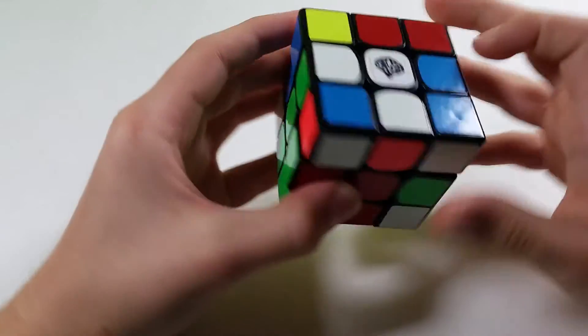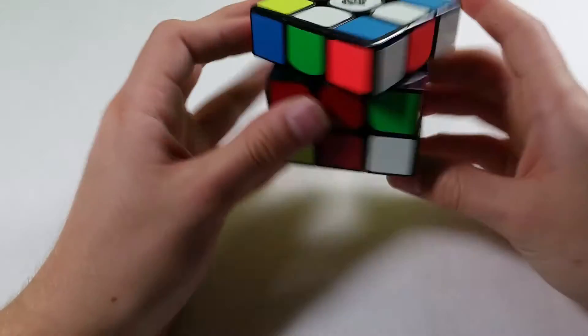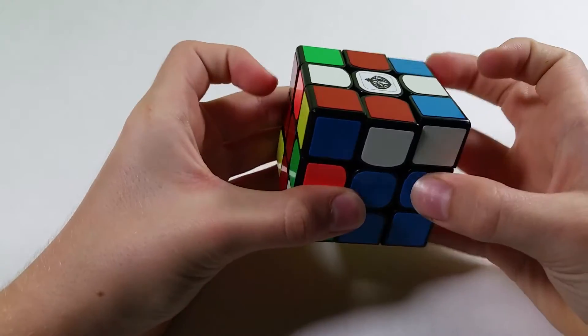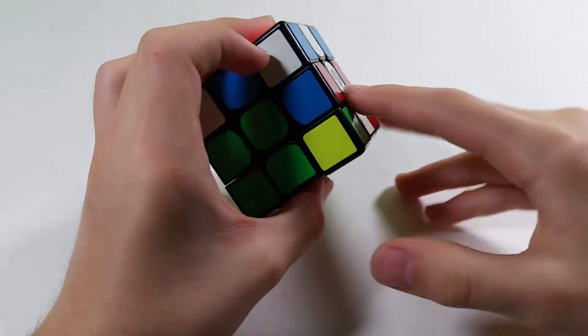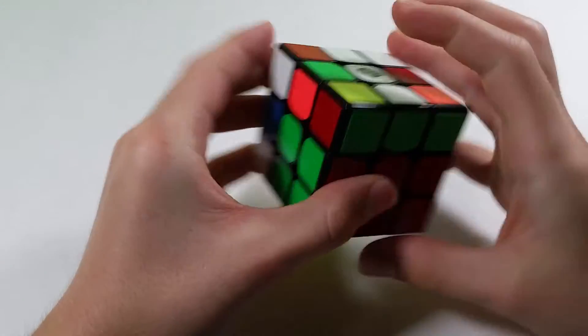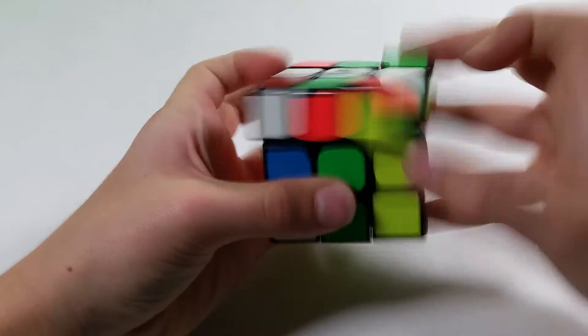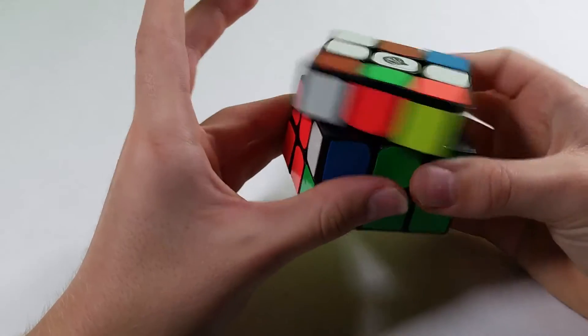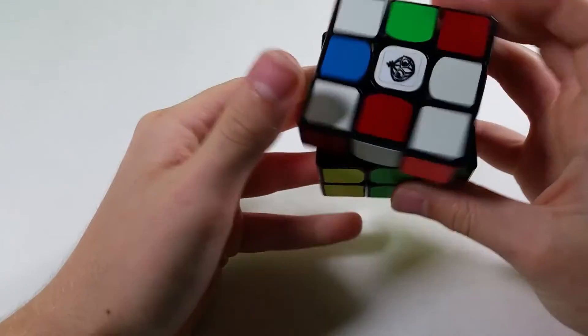First pair, probably these two, so I would rotate and solve them like that. Next we have these two, these two, I just do sexy move three times, these two I would solve like this.